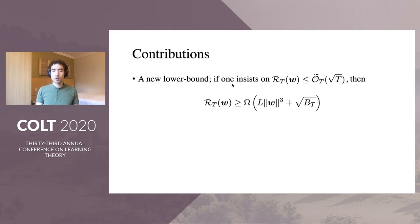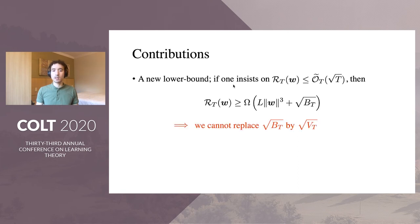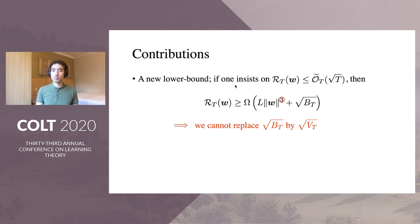Our final contribution is a new lower bound showing that if you insist on a square root T regret, then the lower order term that appeared in our regret bounds is basically unavoidable. In particular, this answers the open question of whether we can replace BT by VT, where BT is the sum of the norms of the gradients and VT is the sum of the squared norms. This also shows that the exponents in the norm of the comparator cannot be improved.